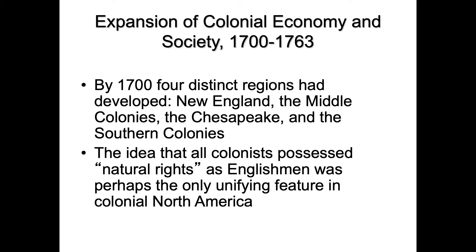Welcome back to History 1301. Today we're going to continue our lecture on the expansion of the American colonies, focusing on the years 1700 to 1763. By 1700, there are going to be four very different regions developing: the New England colonies, the Middle colonies, the Chesapeake, and the Southern colonies. Make sure you know which colonies belong to which specific region.